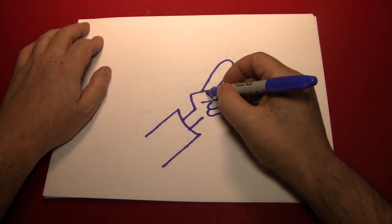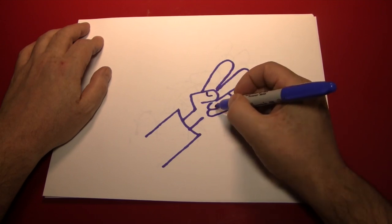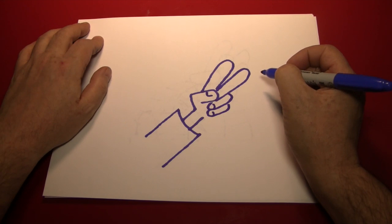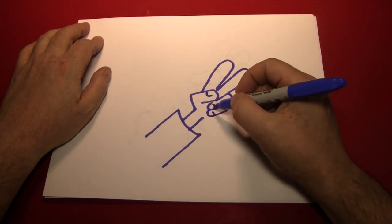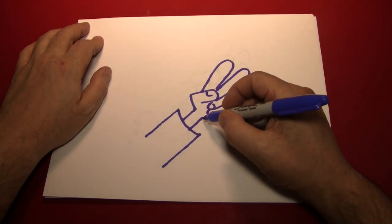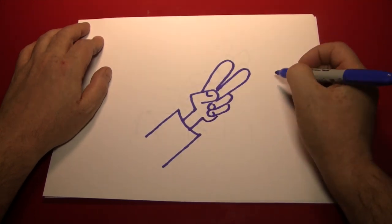Let's add some fingernails. One on the thumb and a couple on the fingers right there. Just little lines like that are enough to indicate that. And finish up the palm of the hand with a curve right there.